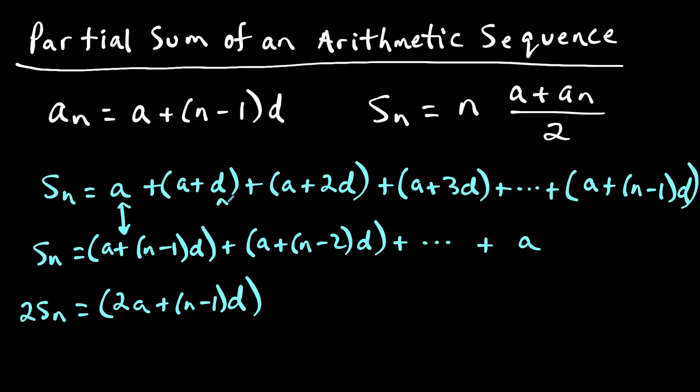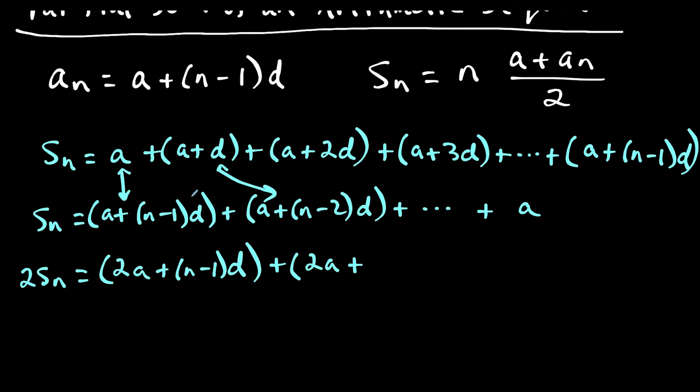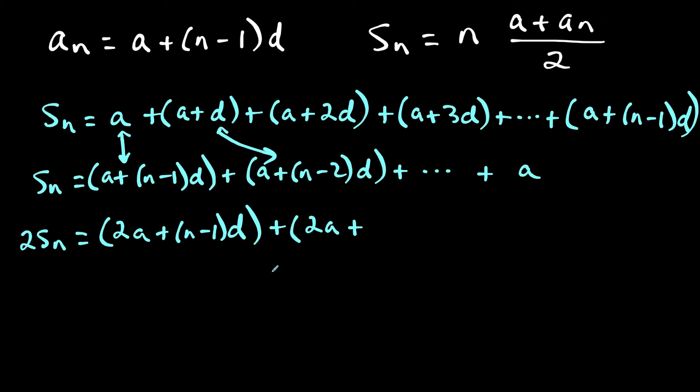Then the next two I would add would be these two. And notice when I do a plus a, that's going to give me 2a plus, and then this part gets a little bit abstract. But when I do d plus n minus 2 times d, I'll do that on the side and then we'll erase it. But when I add d plus n minus 2 times d, this might be a little bit tricky to do in your head.